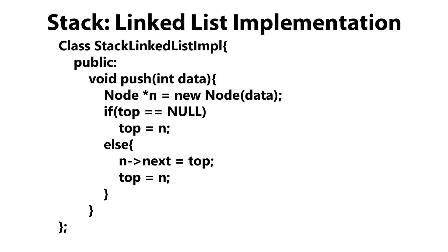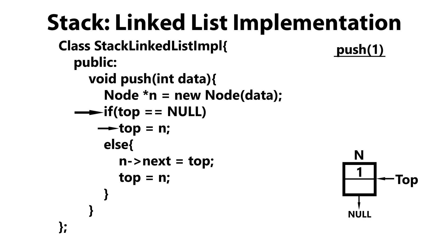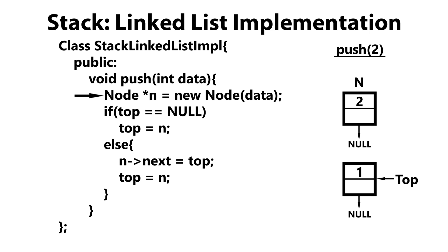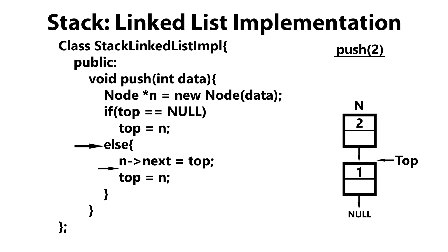Let's look at this in action. If we push 1 onto the stack, 1 gets passed in as the data and we create our node n. We check if top is null — it is — so top points to n, making n the top of the stack. Now let's push 2. The value 2 gets passed into push, we create a node, check if the stack is empty — it's not — so we go to the else condition: n's next pointer points to the current top, then top points to n.